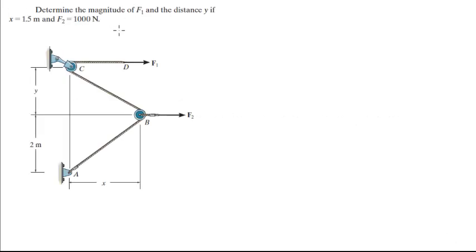Alright guys, let's do this problem where they want you to find the magnitude of F1 and the distance Y if X is equal to 1.5 and F2 is equal to 1000. So the distance from here to here is 1.5 meters.